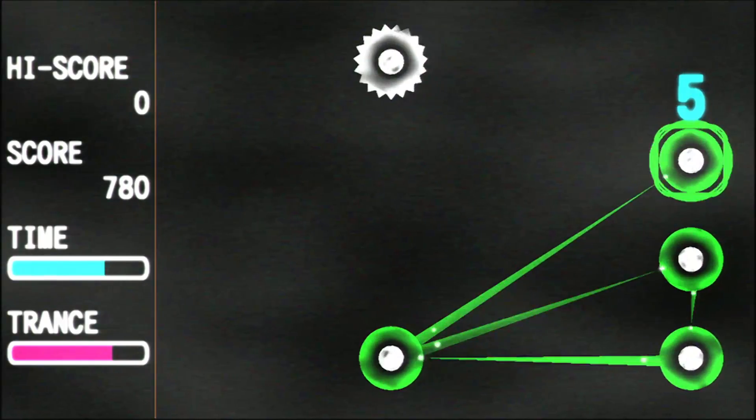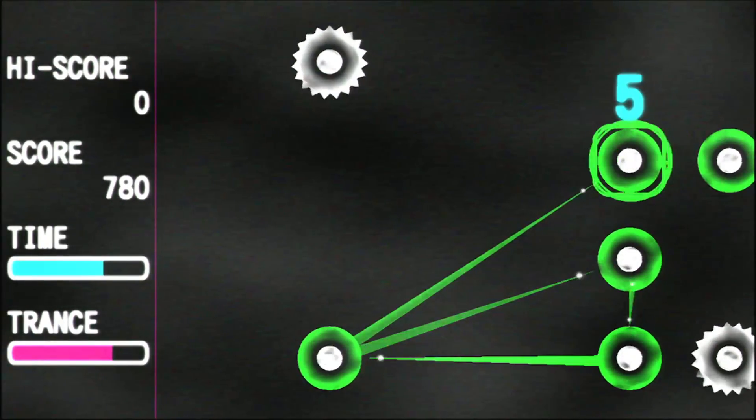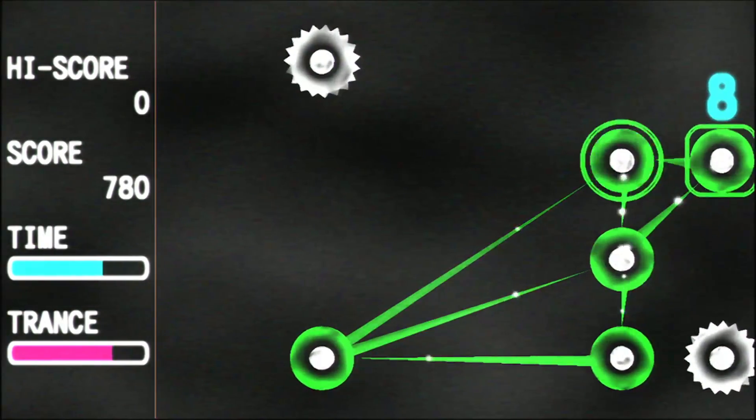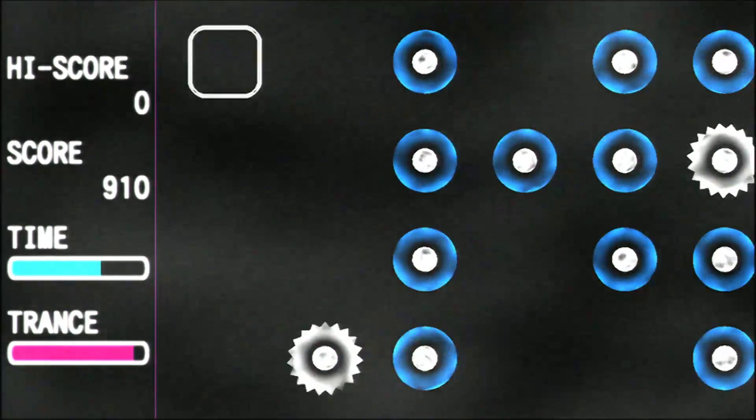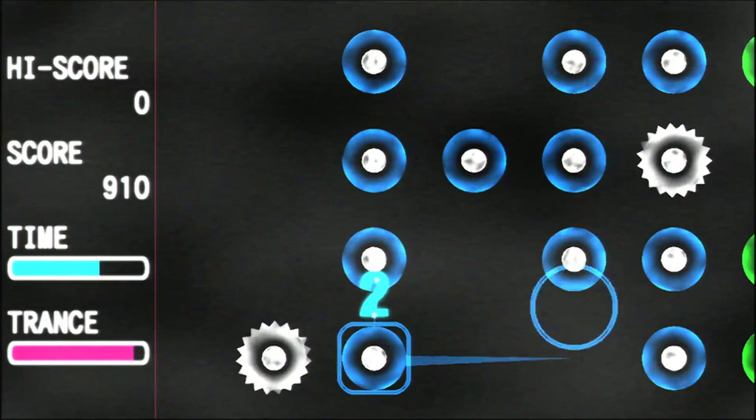While connections can't traverse huge distances or cross through other nodes or connections, they can loop back on themselves and create circuits, before branching off and creating other circuits, with each having a multiplicative effect.